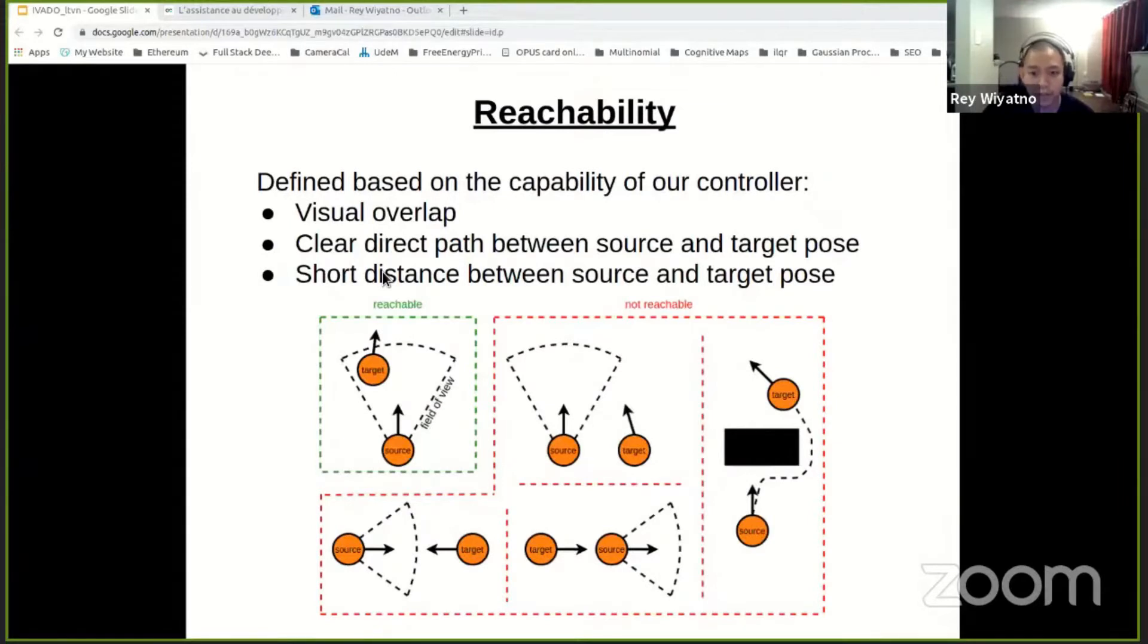So we define reachability based on the capability of our controller, which is a position-based feedback controller with simple motion primitives, namely in-place rotation and forward motion. So this figure roughly illustrates the differences between reachable and non-reachable situations. So we define that in order for an image pair to be reachable, we require them to have a sufficient visual overlap, a clear direct path between the source and target image pose, and the distance between the image pose is small enough.